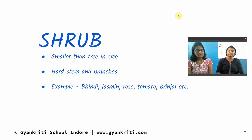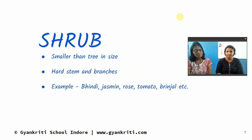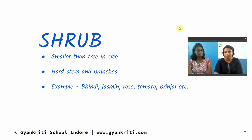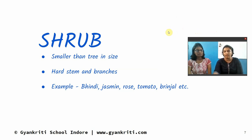Now we will discuss the features of shrubs. They are smaller than trees in size. They have a hard stem and branches. We have seen rose and decorative shrubs. Other examples of shrubs include jasmine, tomato, and brinjal.